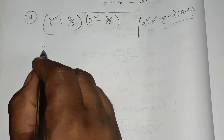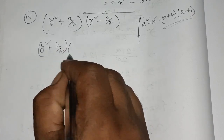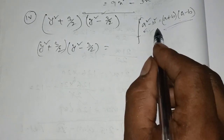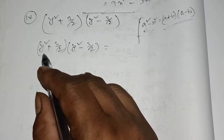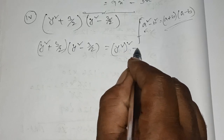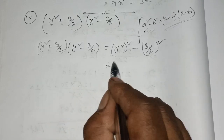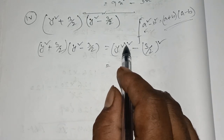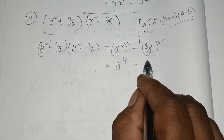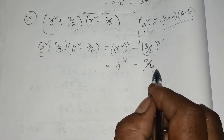For example: y squared plus 3 by 2 into y squared minus 3 by 2. Equal to a squared minus b squared, where a means y squared and b means 3 by 2. So b squared is 3 by 2 whole squared, giving us y to the power 4 minus 9 by 4.